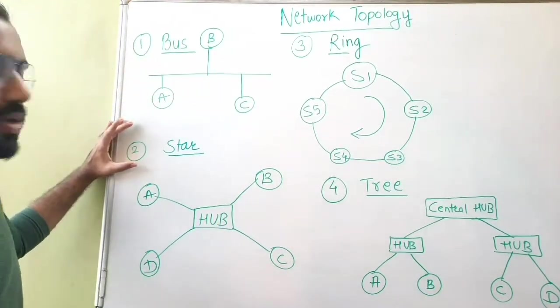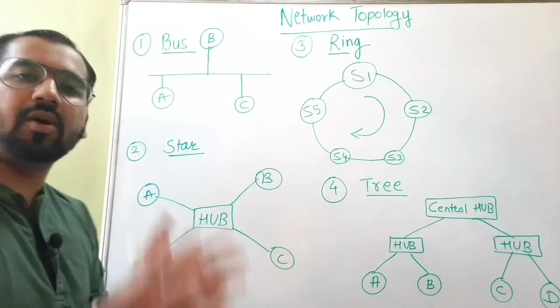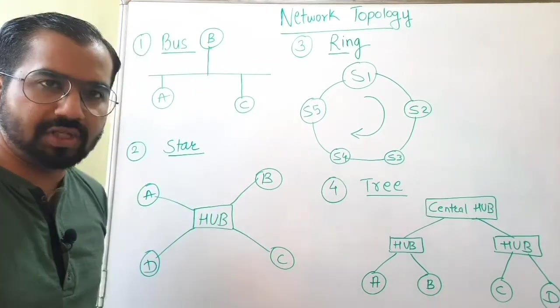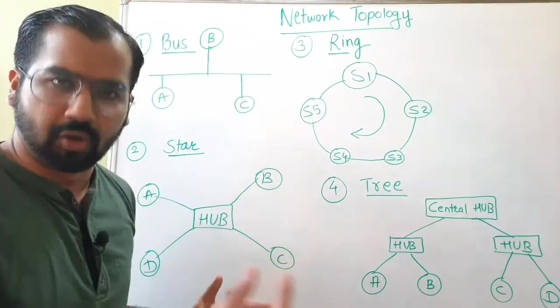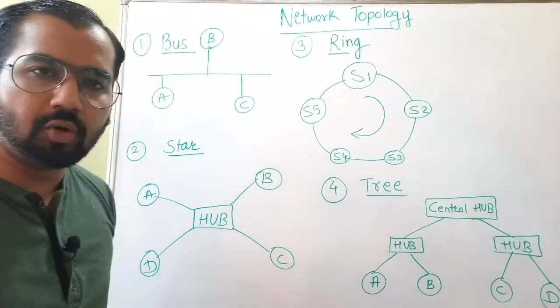Let's move ahead and understand star topology. As this figure shows, it looks like a star. So this is a star topology where there is going to be a central node and that central node here is called as a hub. And what does this hub do?